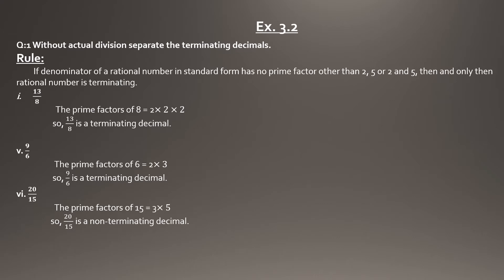For example, the fraction 13 over 8: the denominator 8 = 2 × 2 × 2. Since the only prime factor is 2, this is a terminating decimal.